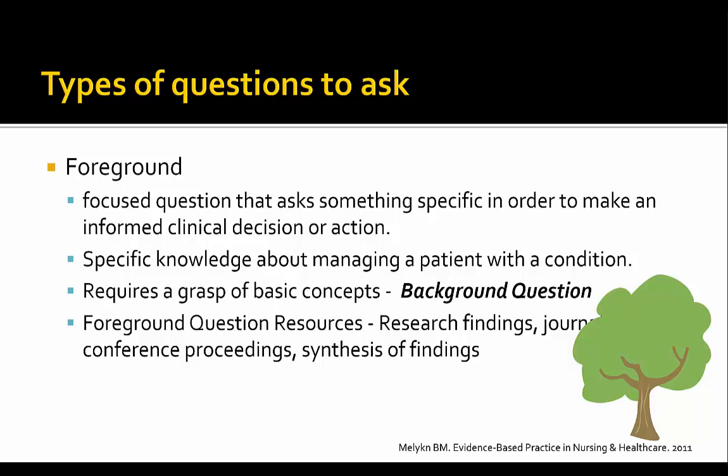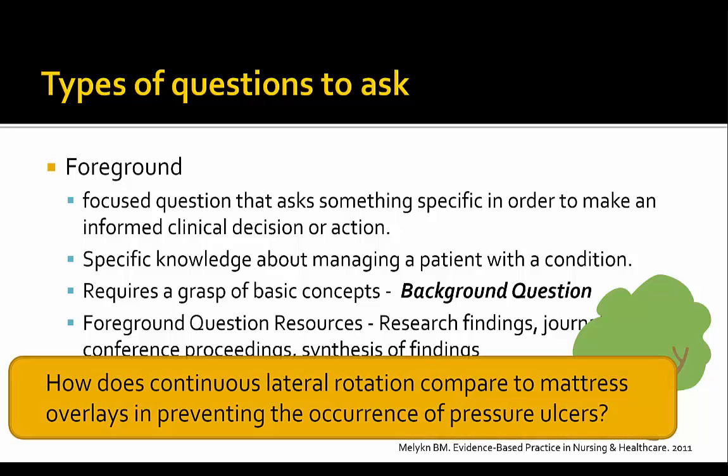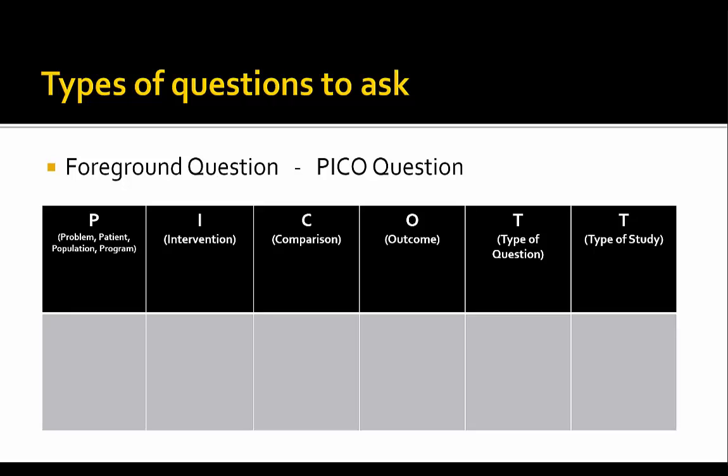Your question will therefore go from being very broad to being very focused. An example would be: 'How does continuous lateral rotation compare to mattress overlays in preventing the occurrence of pressure ulcers?' Instead of broadly asking what interventions prevent pressure ulcers, here we are very specifically comparing two interventions to understand which one will be more effective. This is also where you can use the PICO format — it is very hard, if not impossible, to use PICO with a background question, but with a foreground question, that's exactly where the PICO format comes into play.